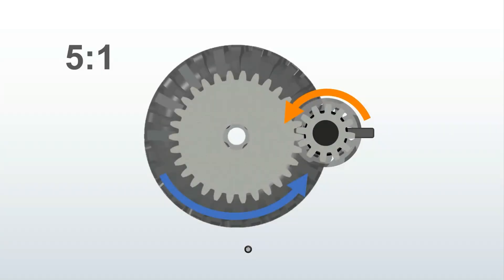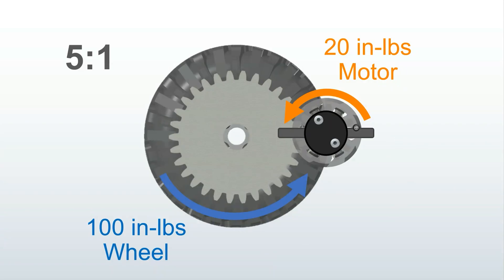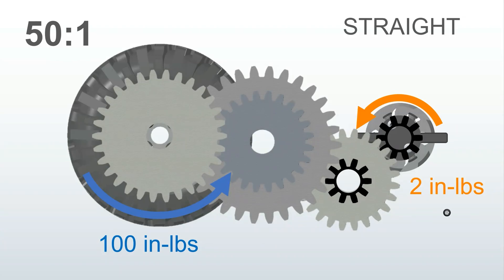Now let's picture a simple gear reduction added to the model — let's just say 5 to 1 to keep it simple. This 100 inch-pounds, let's just assume, is what it takes to move your vehicle forward. If you have a 5 to 1 gear ratio, then you only need one fifth of that 100, which is 20 inch-pounds at the motor. So let's add some more gears in. On a straight axle design, let's say we've got a 50 to 1 gear reduction — that's not a completely unreasonable number. Assuming it takes 100 inch-pounds of torque at your tire to move the vehicle forward, with a 50 to 1 reduction you only need 2 inch-pounds at the motor to put out that drive torque.